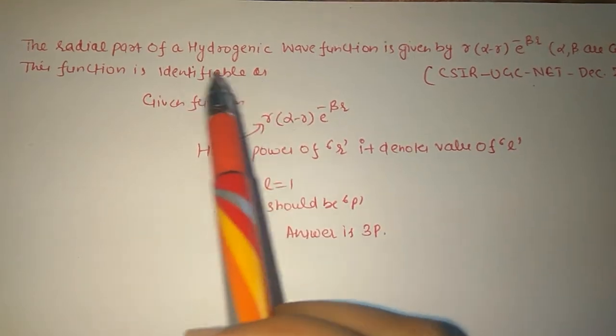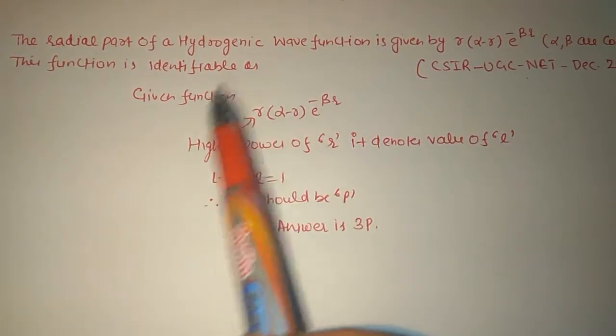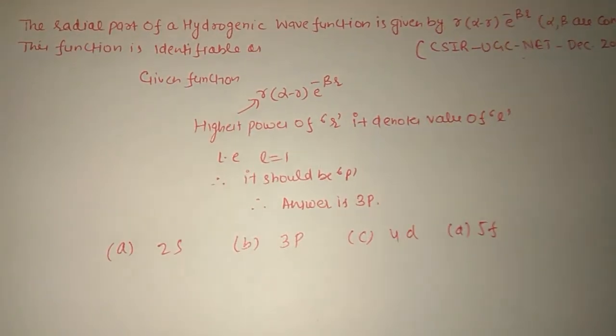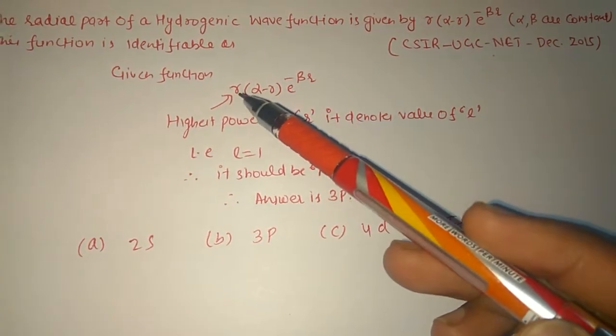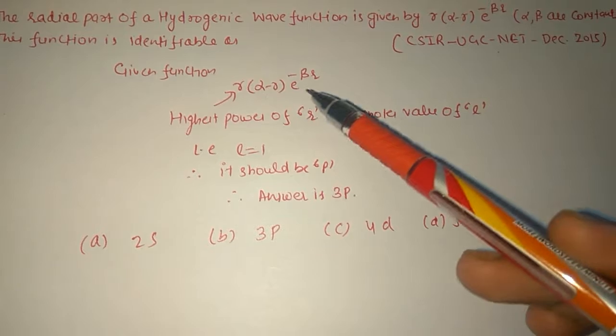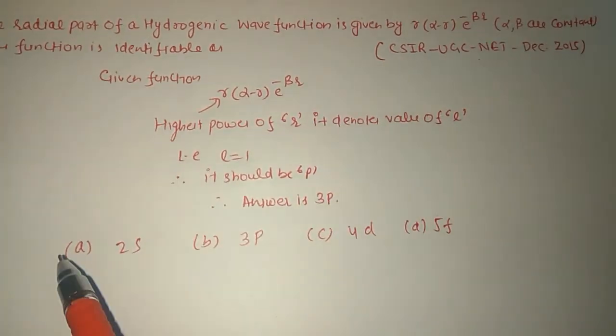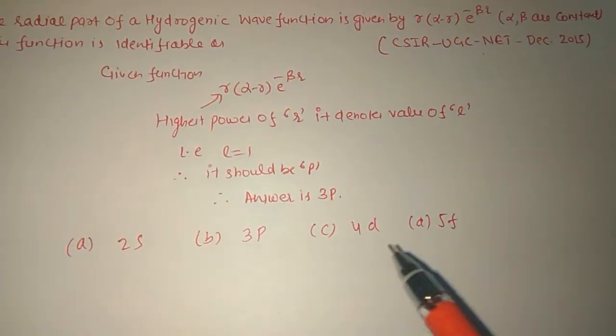Here we have given this wave function: r(α-r)e^(-βr). The options are 2s, 3p, 4d, and 5f.